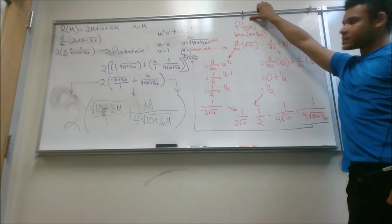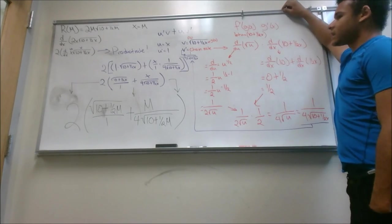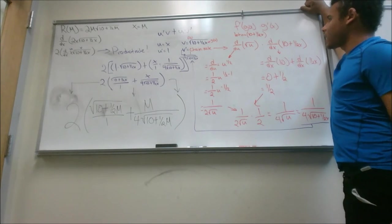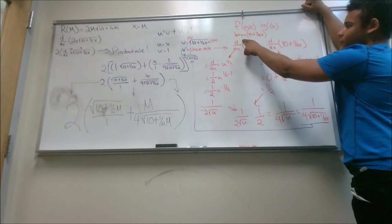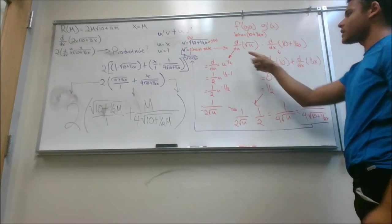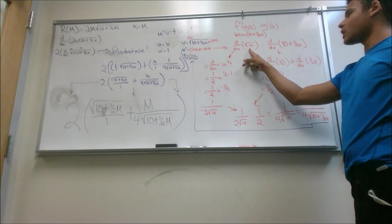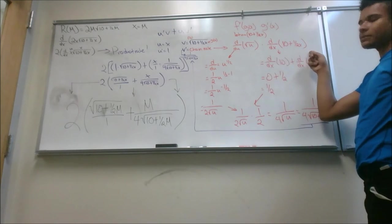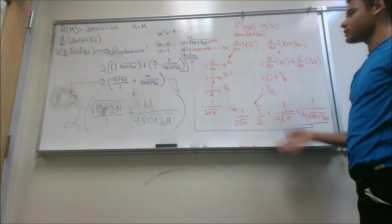Chain rule is F prime of G of X times G prime of X. And for this, just to make it easier, I'll use substitution. So we'll let U equal 10 plus 1 half X. It will be D over DU of the square root of U times D over DX of 10 plus 1 half X. And I'll do each separately.